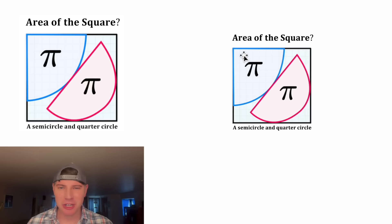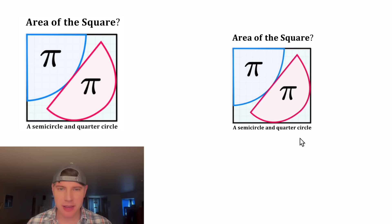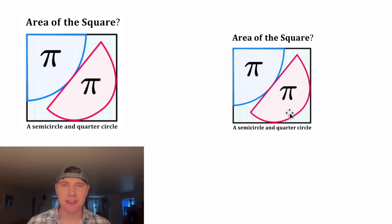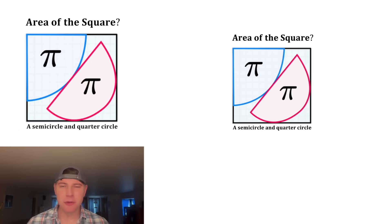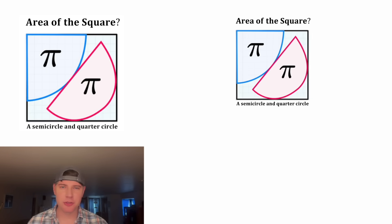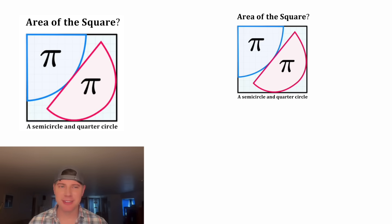Hey guys, this looks like a fun one. We're given a square that contains a quarter circle and a semicircle, each with an area of pi, and it's asking for the area of the entire square. If you want to try it on your own, pause it right now, because I'm going to solve it in three, two, one.